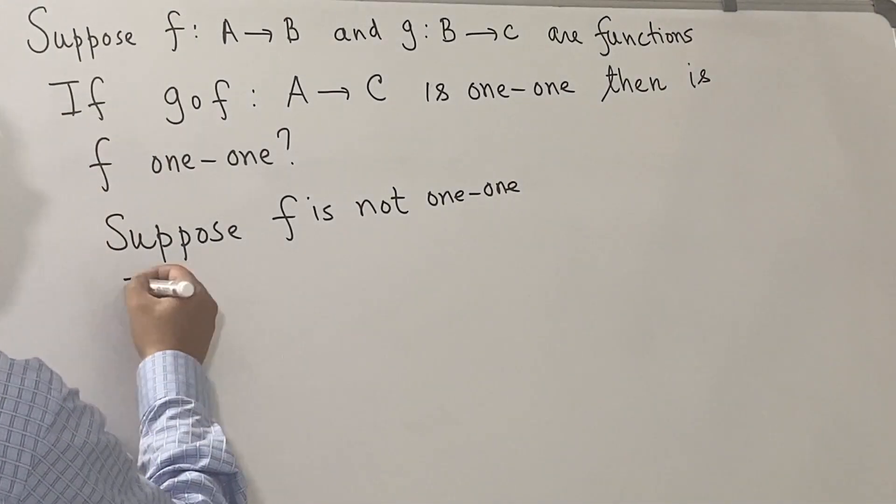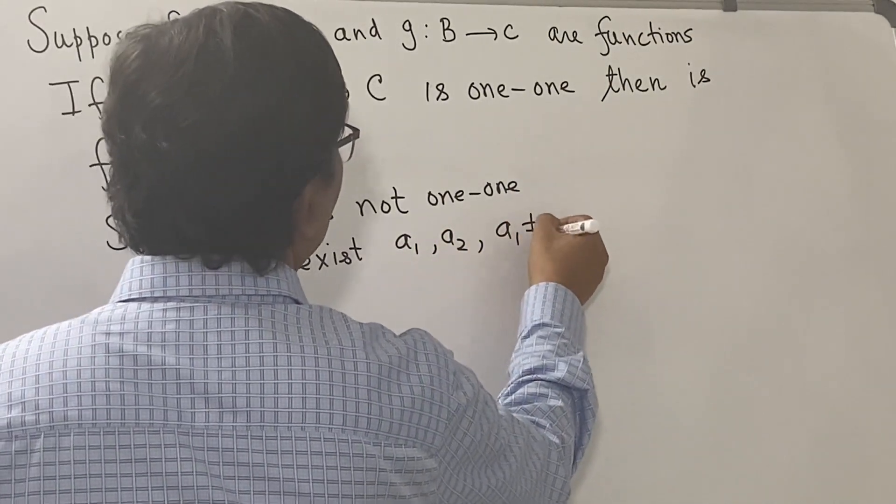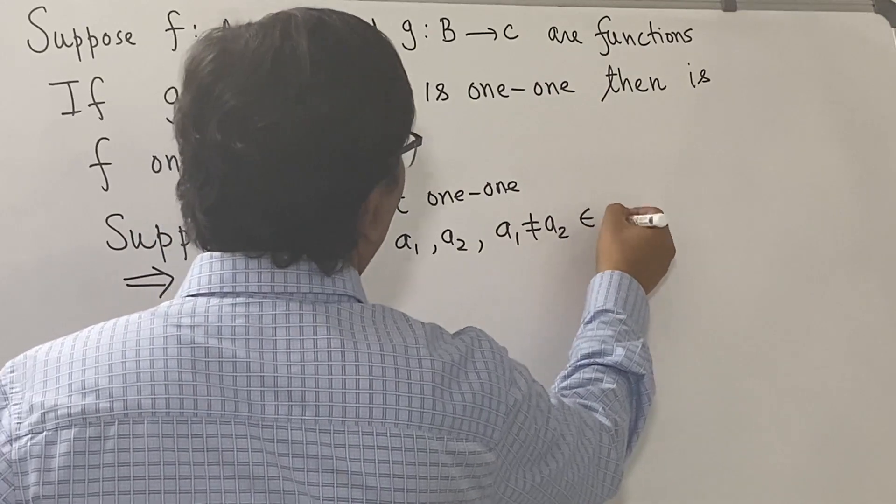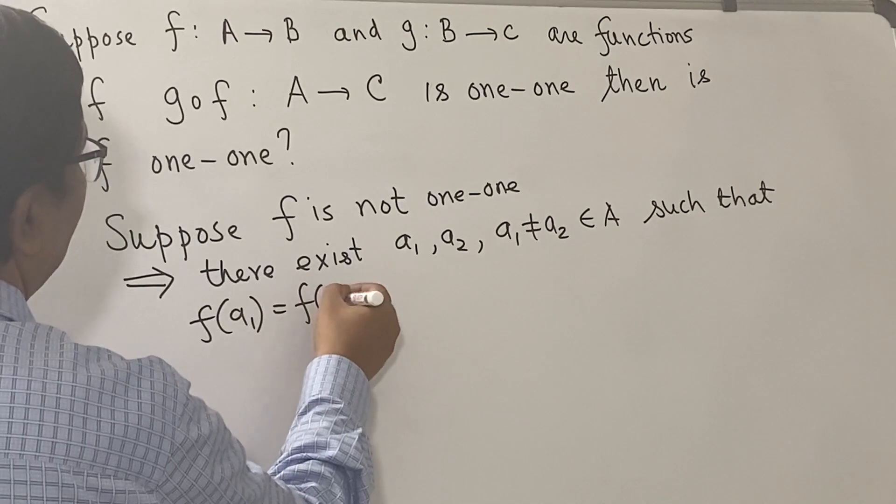What does that mean? That means there exist a₁, a₂ where a₁ ≠ a₂ belonging to A such that f(a₁) = f(a₂).